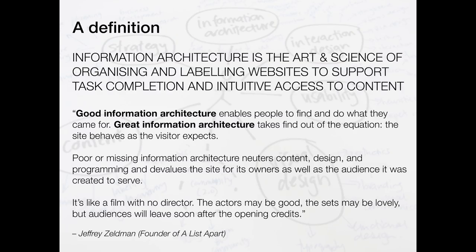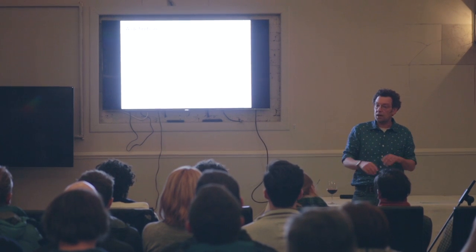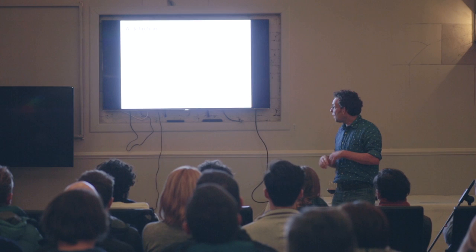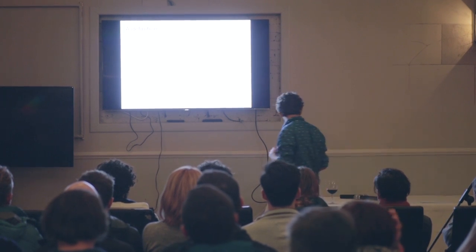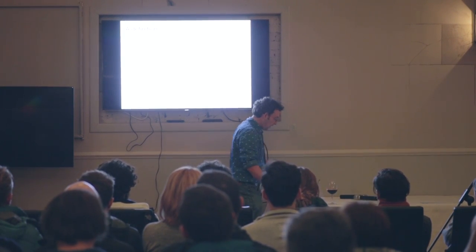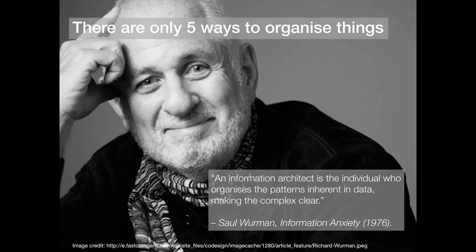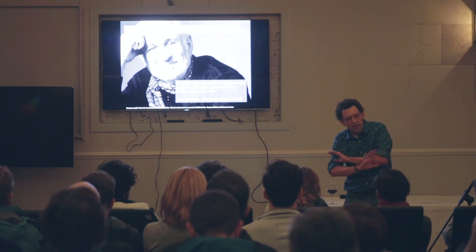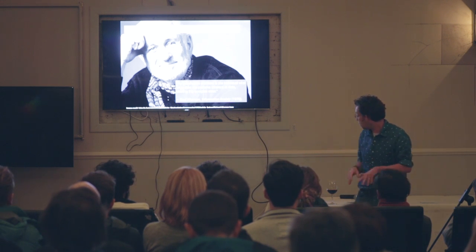Information architecture has loads of definitions, loads of them are really, really pretentious, and there are whole books written about this stuff. But it basically boils down to organising stuff so it's easy to find and intuitive, and the way you organise stuff implies meaning to it. That goes for websites and it goes for the real world as well. Thankfully, some big brains - this guy is Saul Weinman - came up with five ways to organise anything in the world. That's the secret of information architecture.